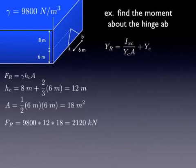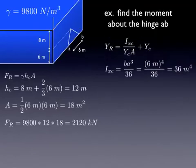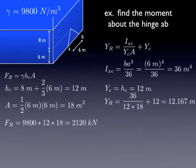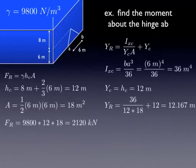Now we have to figure out where that force acts. We use that same equation. Moment of inertia for a triangle we've already looked at. This turns out to be 36 meters to the fourth in this case. Yc is the distance from the water surface to the centroid in the direction of the planar surface, which in this case is exactly equal to Hc. Now we've got everything to solve for Yr. It turns out to be 12.167, which is just a little bit lower than the centroid of the object.